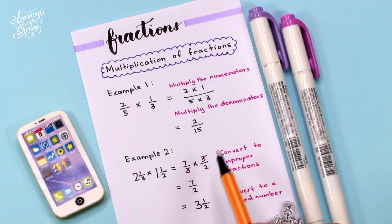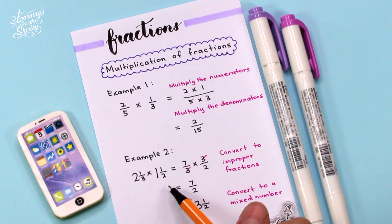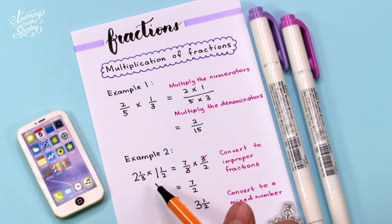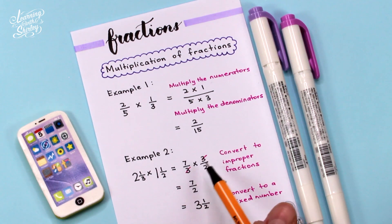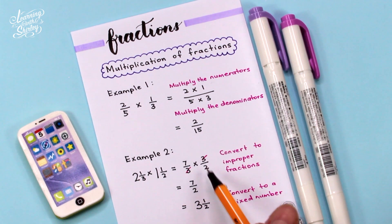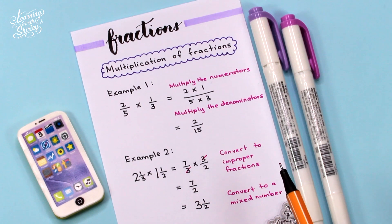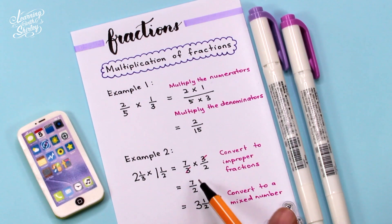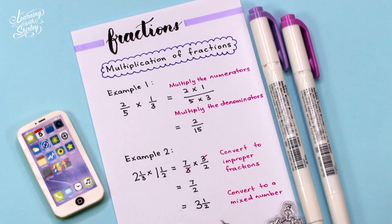Example 2: What if we're given two mixed numbers? 2 and 1 over 3 times 1 and 1 over 2. First, we convert them into improper fractions: 7 over 3 times 3 over 2. Then we cancel where possible — 3 and 3 cancel — giving 7 over 2. We then convert this improper fraction into a mixed number: the answer is 3 and 1 over 2.